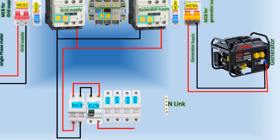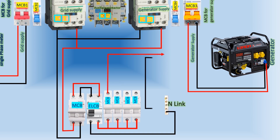The phase wire from the ELCB is looped with the single-pole MCBs, while the neutral wire is connected to the neutral link. This completes the power circuit.